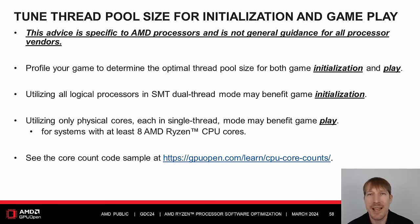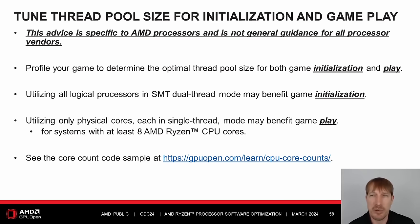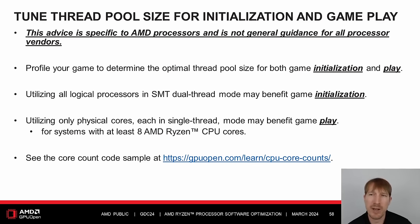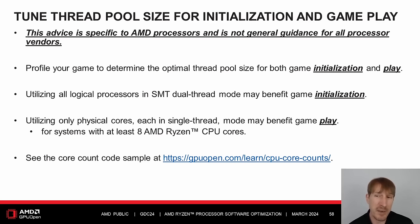Threading. This advice is specific to PCs with AMD processors and is not general guidance for all processor vendors. Profile your game to determine the optimal thread pool size for both game initialization and gameplay. Utilizing all logical processors in SMT dual-thread mode may benefit game initialization including decompressing assets, compiling, and warming shaders. However, SMT and cache contention on the main or render threads may lower performance during gameplay. Tuning the thread pool size based on the number of physical cores may reduce this contention. For gameplay, we recommend using the physical core count on systems with at least eight Ryzen CPU cores. Thanks to this optimization, some games increase frame rates by 5 to 10 percent.